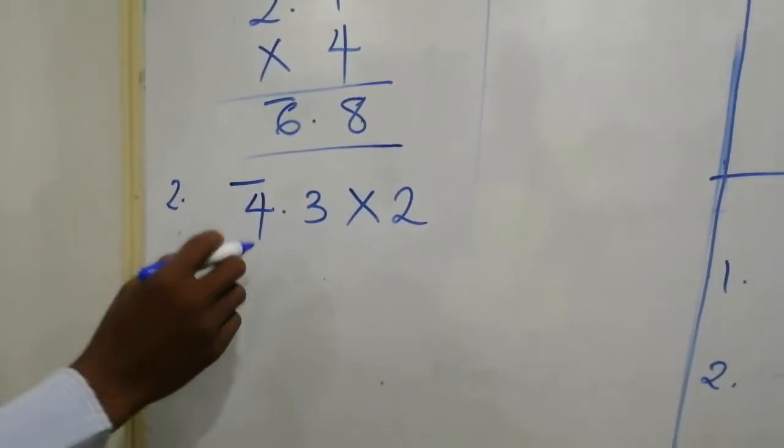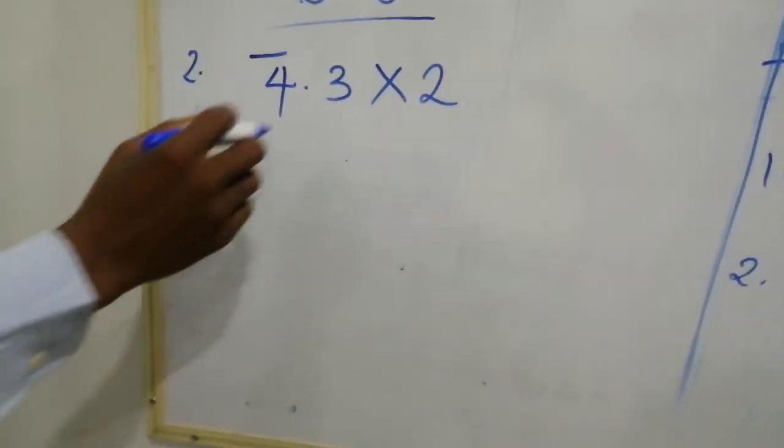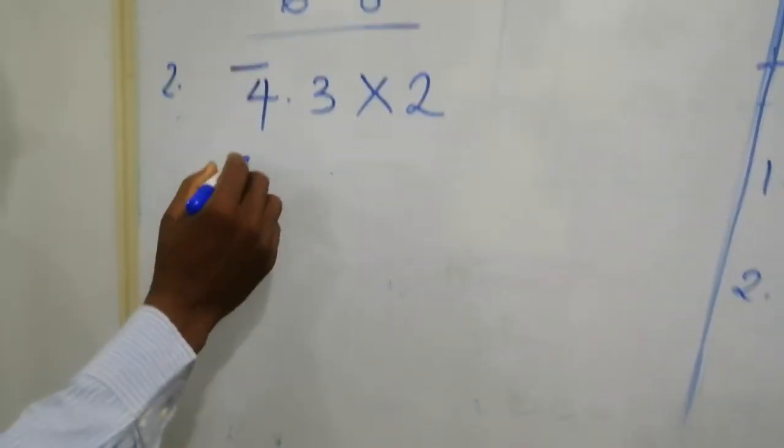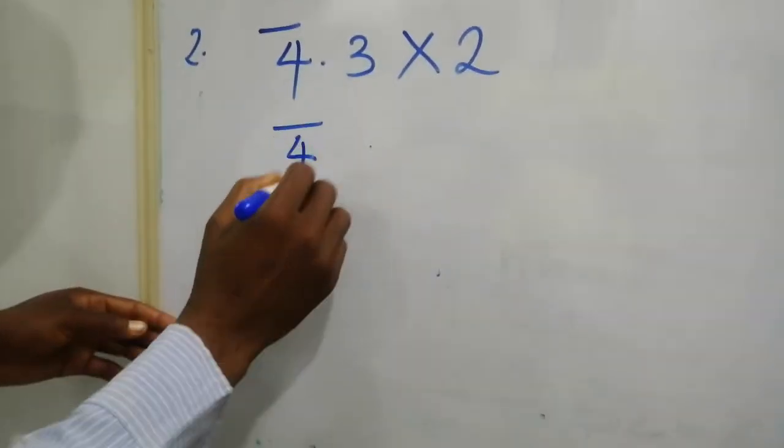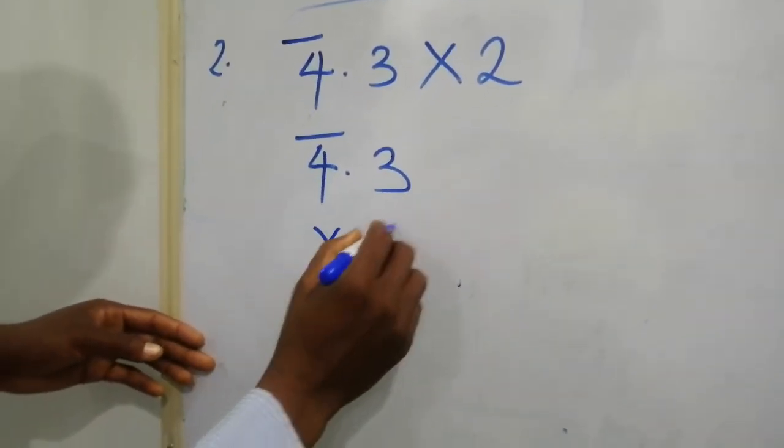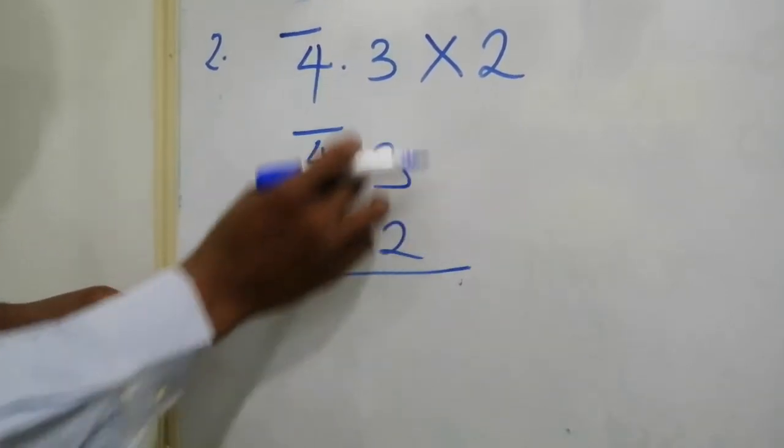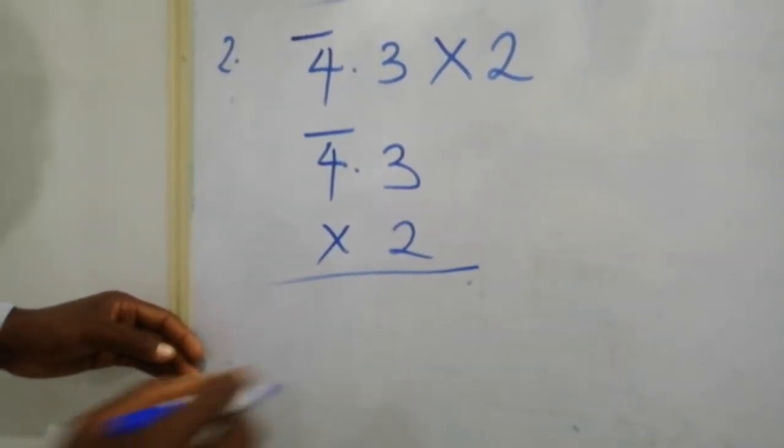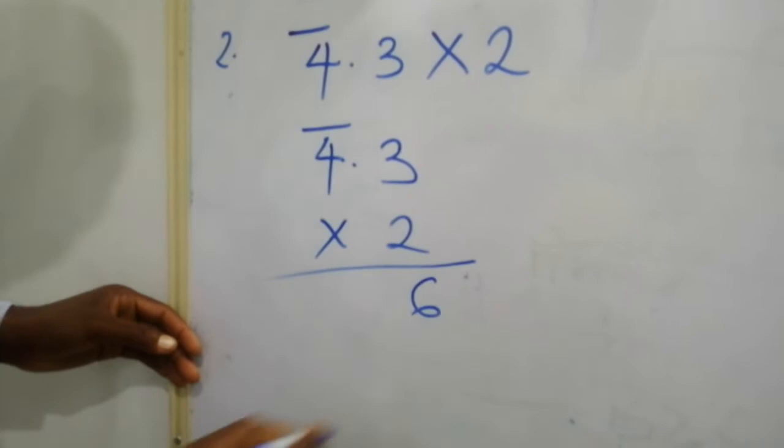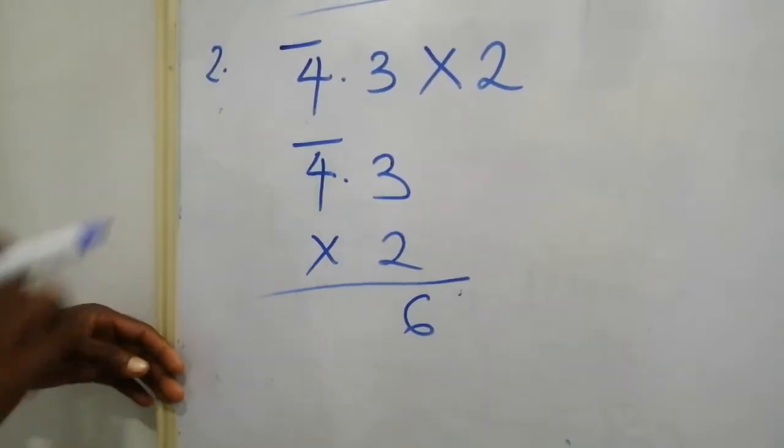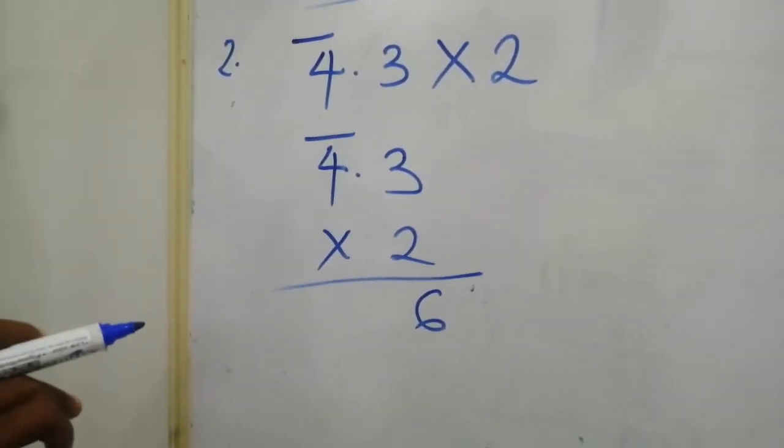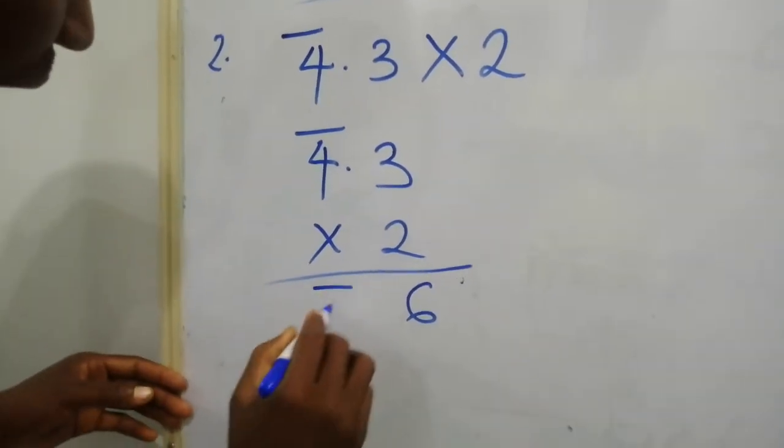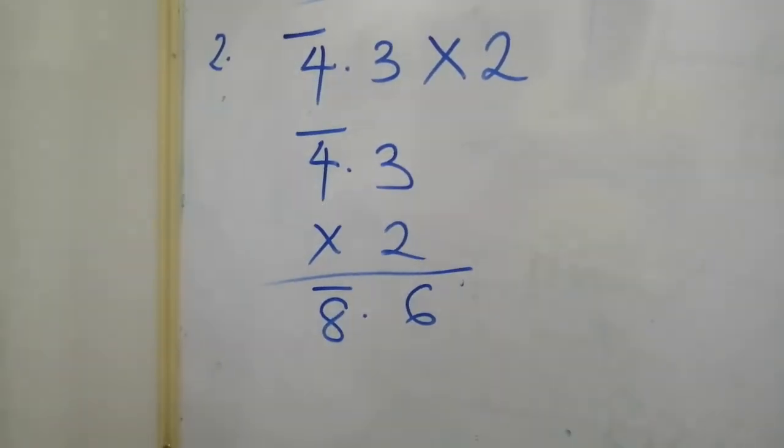Bar 4.3 × 2. 2 × 3 will give us 6. 2 × bar 4 will give us bar 8.6.